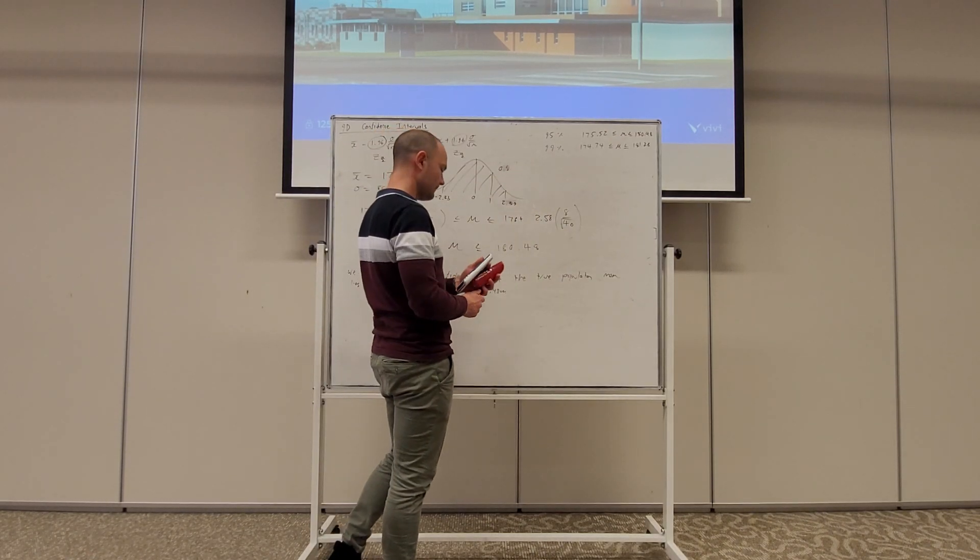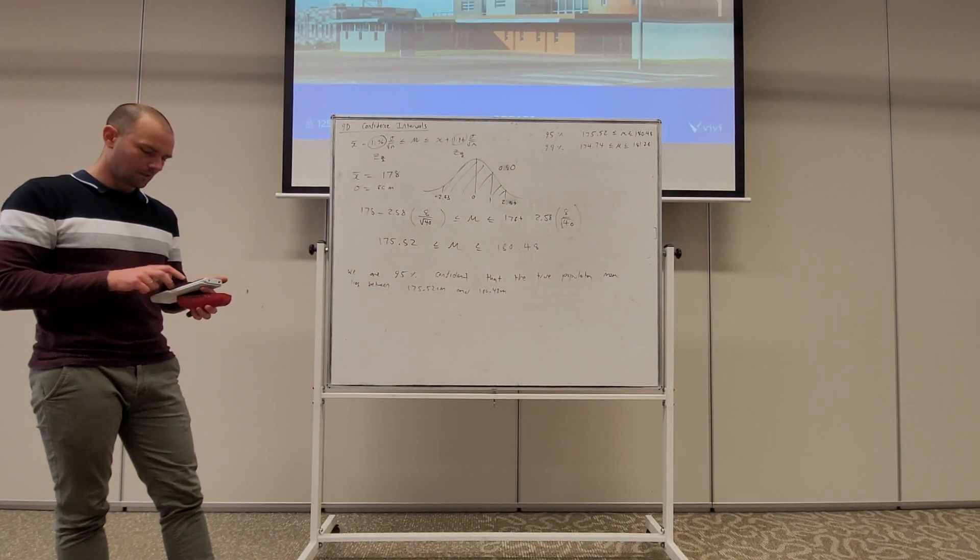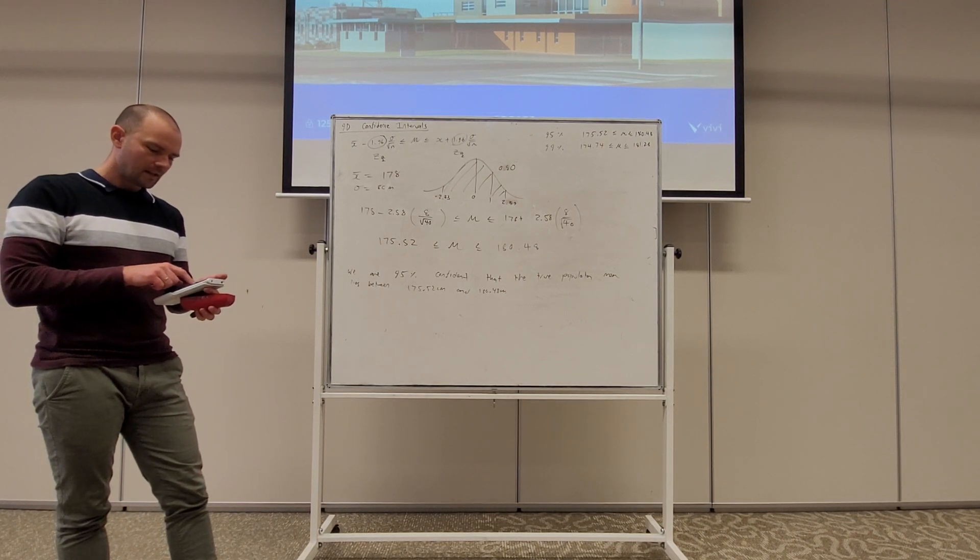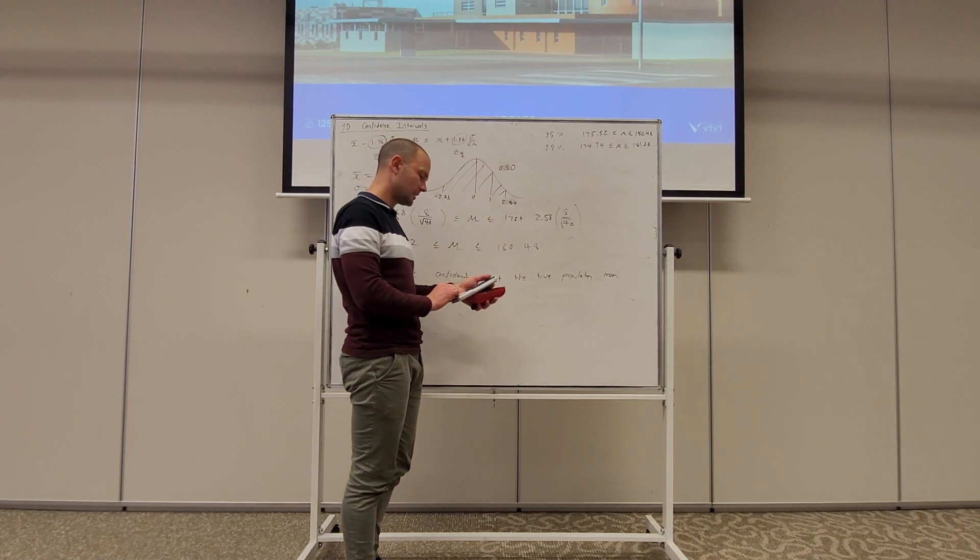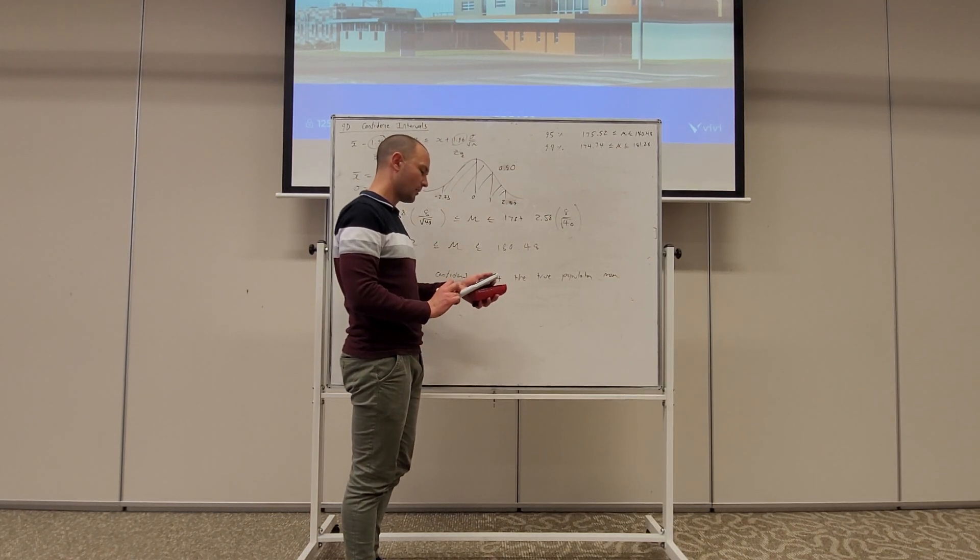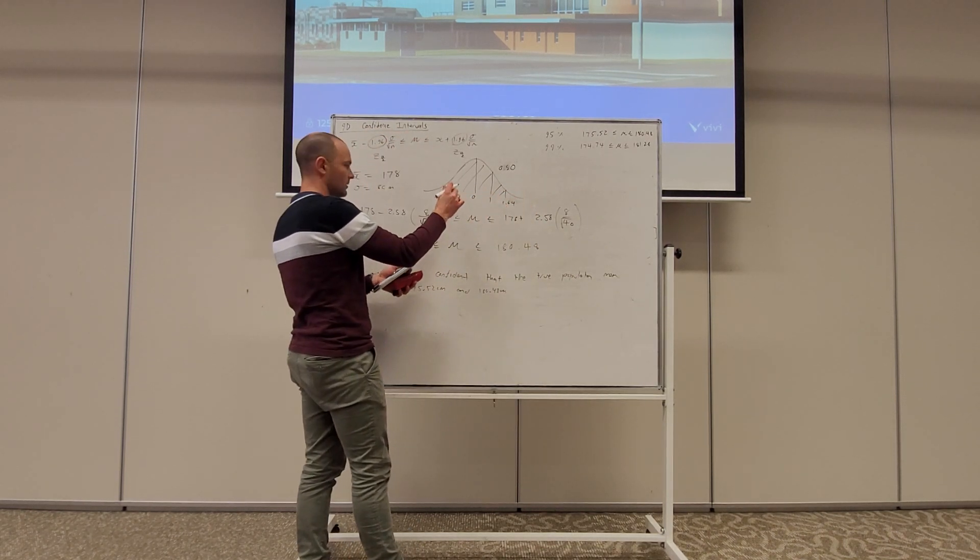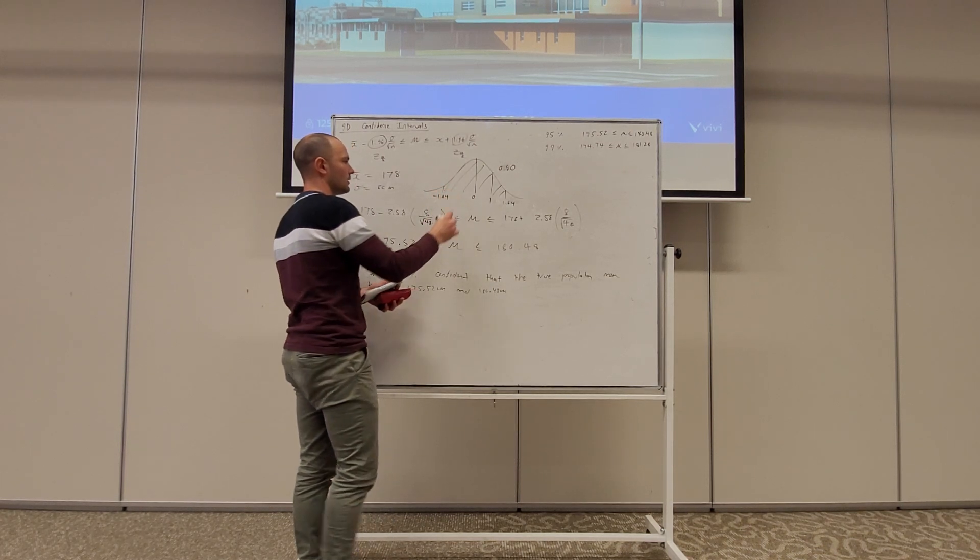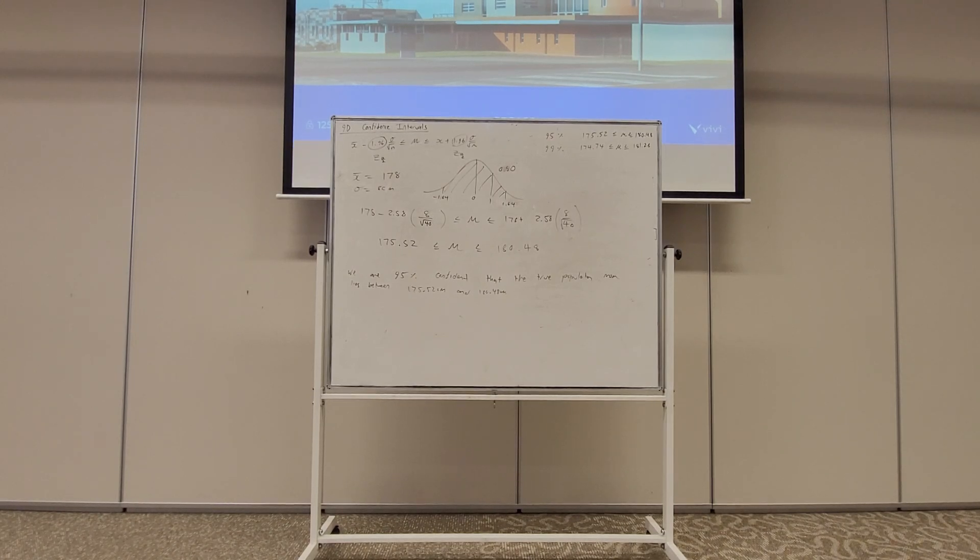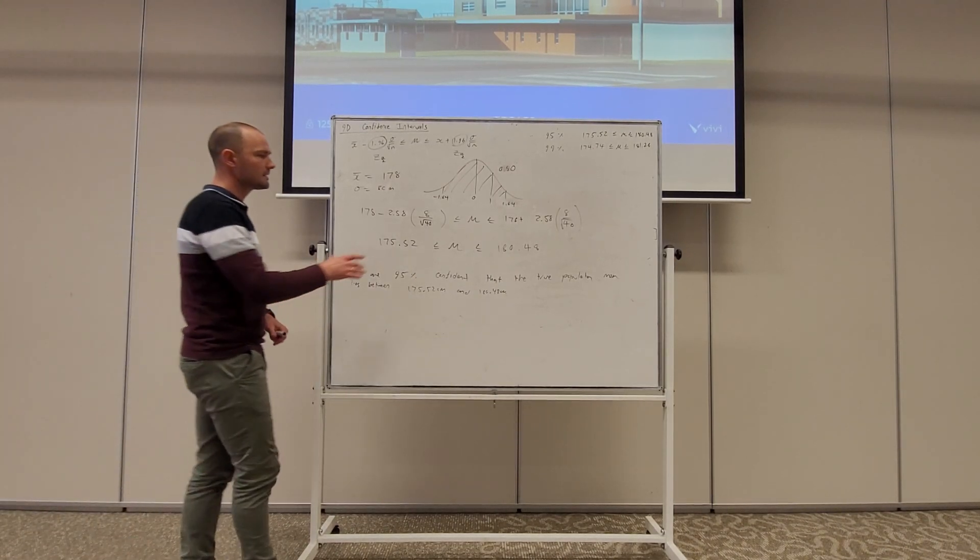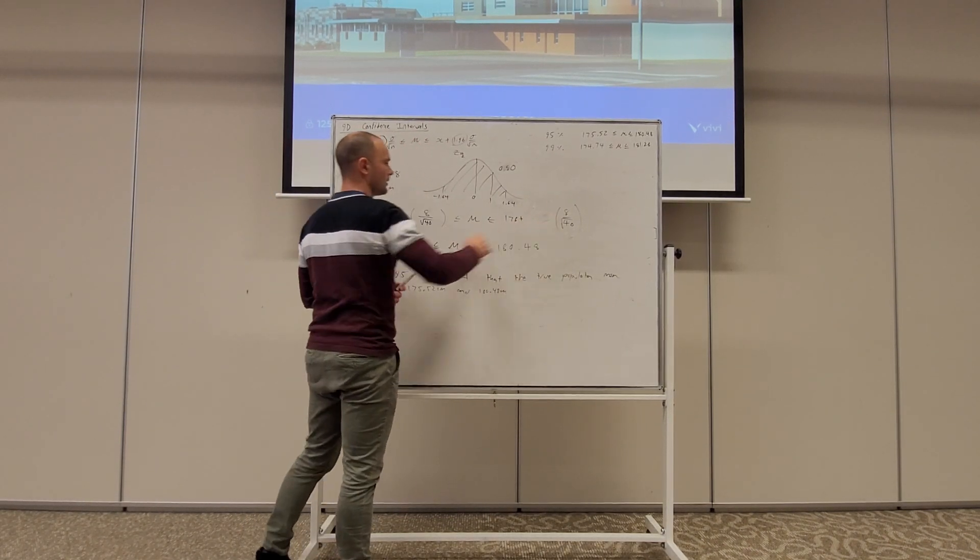So for 90%, we're doing an inverse normal calculation. So in stats mode, stats, distribution, normal, inverse normal. Our area is central, and we have 90% area. For a Z distribution, the standard deviation is 1, and the mean is 0, and we're just evaluating that. And we've got 1.64 and minus 1.64. Between 1.64 and 1.64, area 90%. So that means, for our 90% calculation, we're changing the Z alpha on 2 value to 1.64.